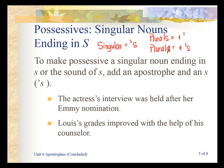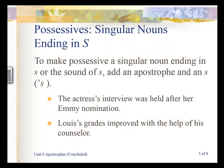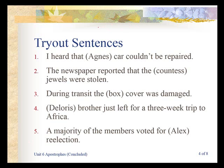Let's look at how that holds true in these examples. 'The actress's interview was held after her Emmy nomination.' We have one actress — that means it's singular — so to show possession we add apostrophe s. 'Lewis's grades improved with the help of his counselor.' Lewis is singular, so to show possession we add an apostrophe s. If it's plural and ends in s, we add only an apostrophe.